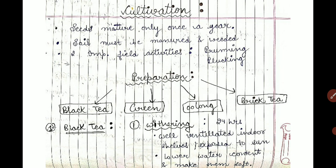The first process in black tea preparation is withering. After extracting the leaves of tea, they are kept for 24 hours on shelves exposed to sun and ventilation. What happens is that the water content of the leaves is reduced, making them soft and flaccid. This process is called withering.